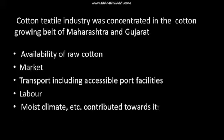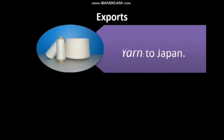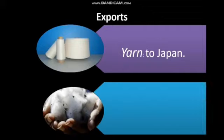The moist climate of both states suited the temperature required for cotton industries. Cotton threads tend to break in dry climate while they rarely break in moist and humid climate. India exports yarn to Japan and other cotton goods to the USA, UK, Russia, France, East European countries, Nepal, Singapore, Sri Lanka and African countries.